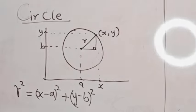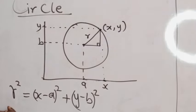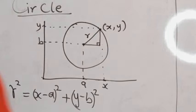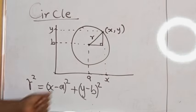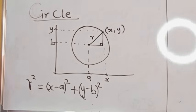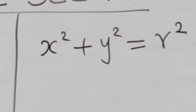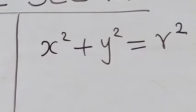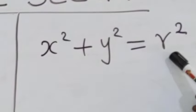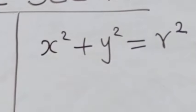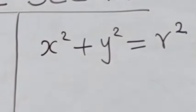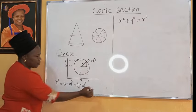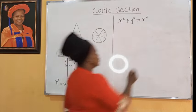By the Pythagorean theorem, we have that r squared is equal to (x minus a) squared plus (y minus b) squared. Here we have the equation of a circle whose center is given as (a, b) and the radius is r. This is the standard form of the circle equation. Let's call this equation 1.